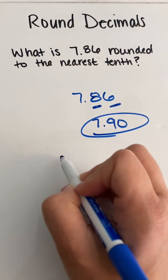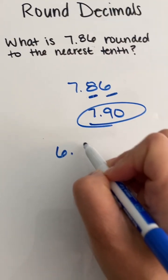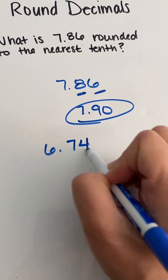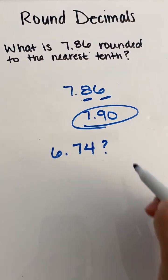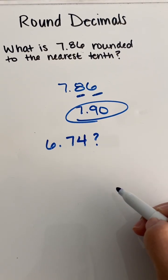Let's try 6.74 rounded to the nearest tenth. So go ahead and put that answer in the comments below. Thank you.